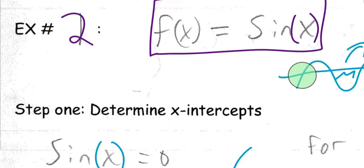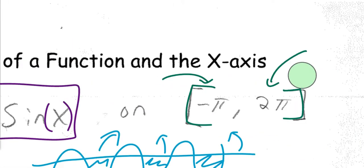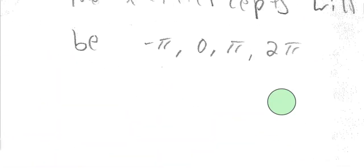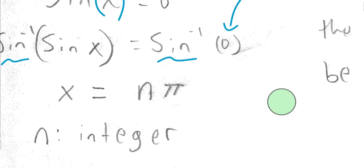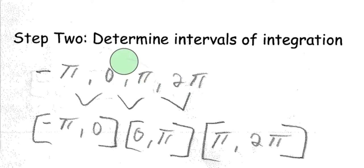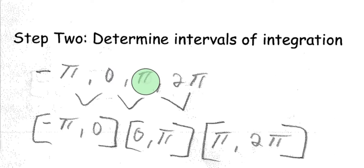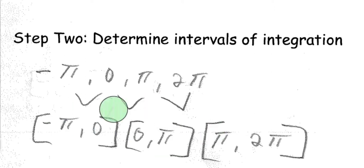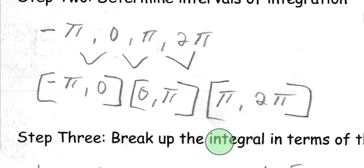Step two is to determine the intervals of integration. If we want to find the total area between negative pi and 2 pi, we have to break that interval up based on these x-intercepts. Between negative pi and 2 pi, the graph crosses the x-axis at 0 and at pi. Because of that, we end up with three separate intervals: from negative pi to 0, from 0 to pi, and from pi to 2 pi.